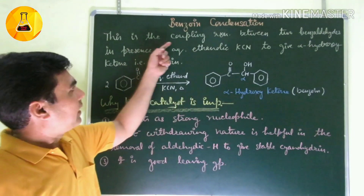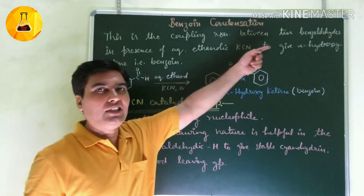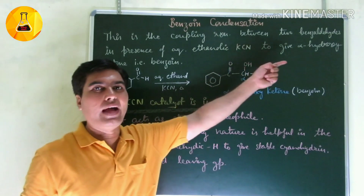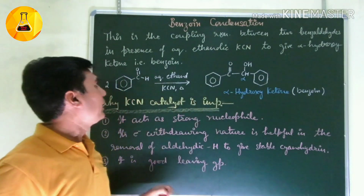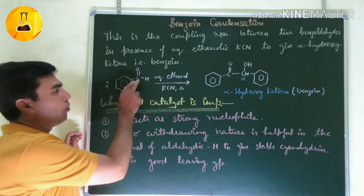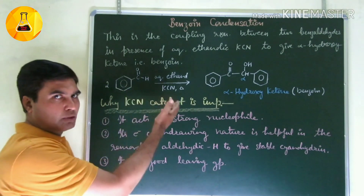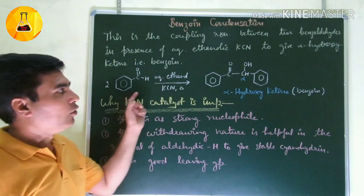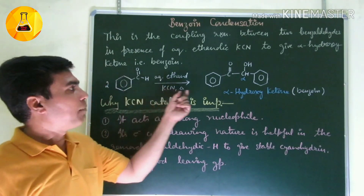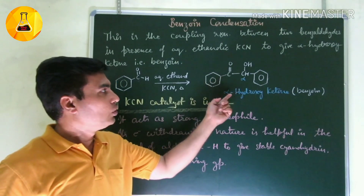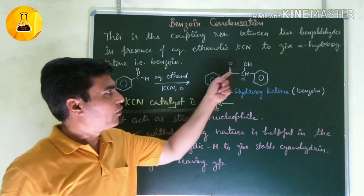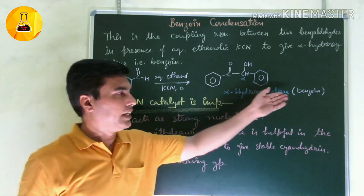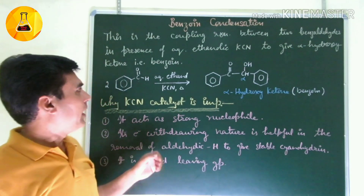This is the benzoin condensation reaction between two benzaldehyde molecules in presence of aqueous ethanolic KCN to give an alpha hydroxy ketone. When two benzaldehyde molecules condense together in the presence of aqueous ethanolic KCN with heat, both molecules join together and form an alpha hydroxy ketone. This alpha hydroxy ketone is commonly known as benzoin.